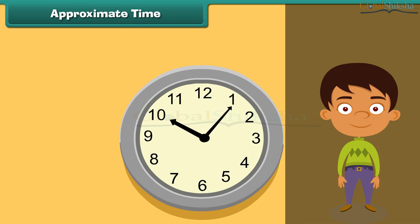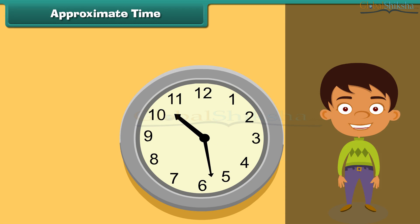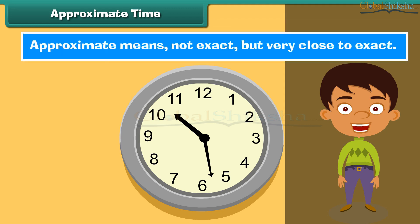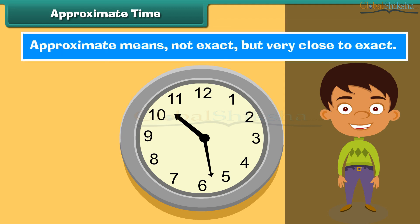Approximate time. Look at the clock face. It is not yet 10:30 but it is very close to 10:30. So the approximate time is 10:30. Approximate means not exact but very close to exact.